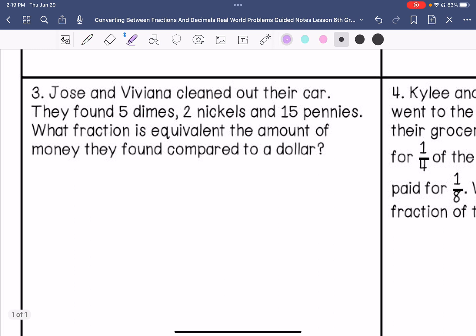Number three, Jose and Viviana cleaned out their car. They found five dimes, two nickels, and fifteen pennies. What fraction is equivalent to the amount of money they found compared to a dollar? So five dimes, dimes are ten cents a piece, so that would be fifty cents for five dimes.